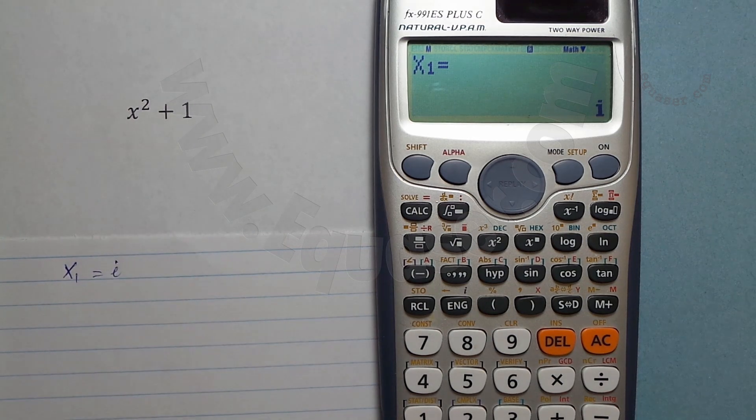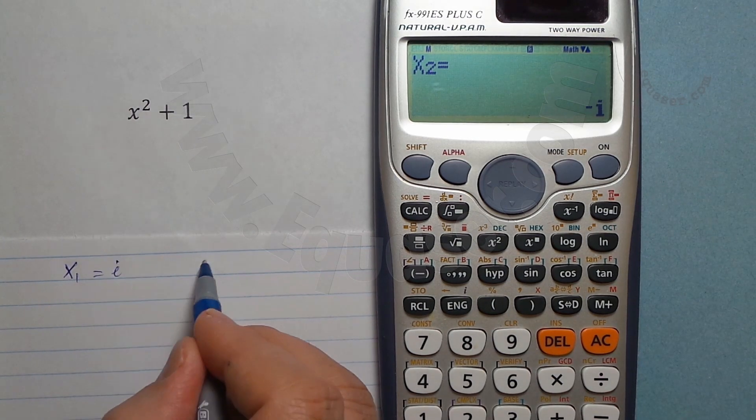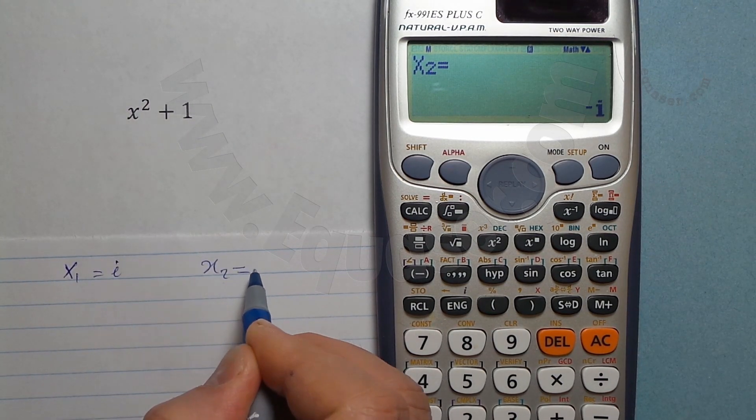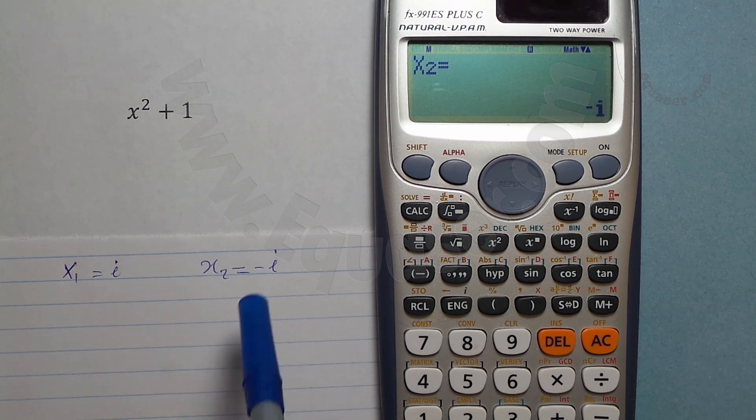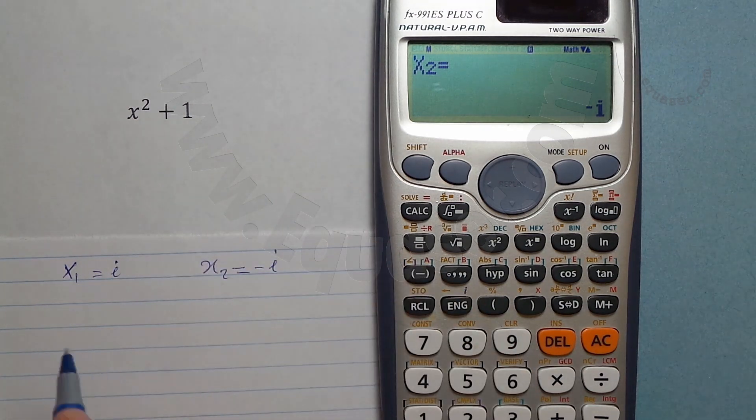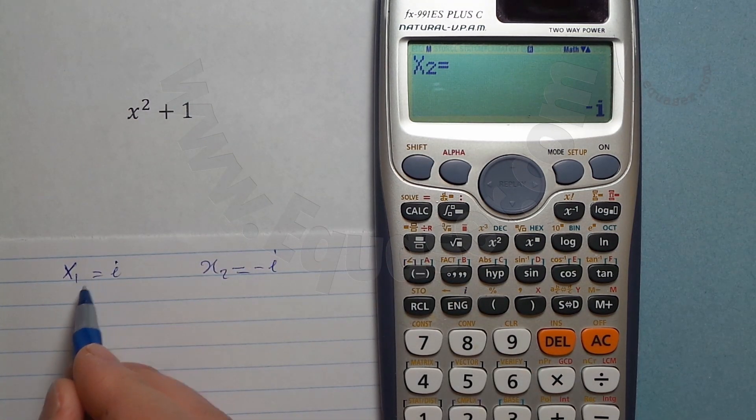So let's do that. A is 1, b is 0, I press 0 and then equal sign, and it moves, and then 1. When I press for the final answer, the answer is x1 is equal i and x2 is equal minus i. That's an imaginary number.